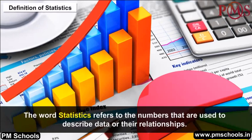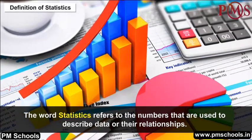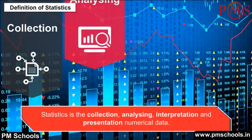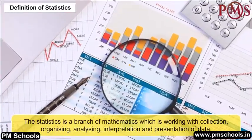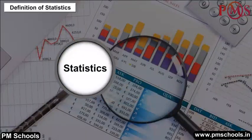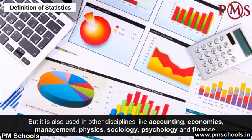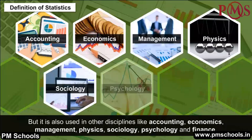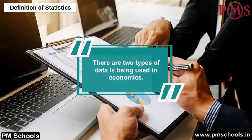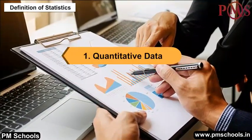The word statistics refers to the numbers used to describe data or their relationships. Statistics is the collection, analyzing, interpretation, and presentation of numerical data. It is a branch of mathematics working with collection, organizing, analyzing, interpretation, and presentation of data. It is also used in other disciplines like accounting, economics, management, physics, sociology, psychology, and finance. There are two types of data used in economics: quantitative and qualitative.